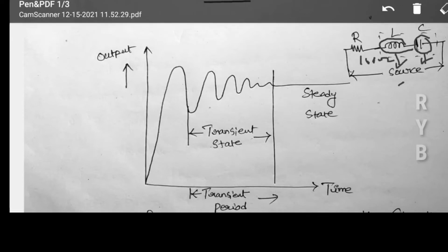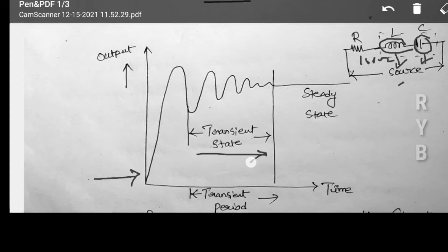Transient is the state of the element from one steady state to another steady state. When you apply a voltage source to an RL circuit, a transient state will occur. After the transient, it will reach another steady state. Between two steady states there is a transient period.